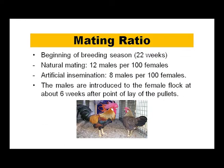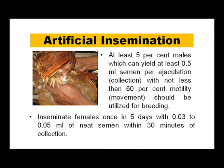The mating ratio at breeding season (around 22 weeks of age) is 12 males per 100 females in natural mating, and 8 males per 100 females in artificial insemination. Males are introduced to the female flock at 6 weeks after point of lay. For artificial insemination, at least 5% of males yielding 0.5 ml semen per ejaculation with not less than 60% motility should be utilized, and females inseminated once every 5 days with 0.03 to 0.05 ml of neat semen within 30 minutes of collection.